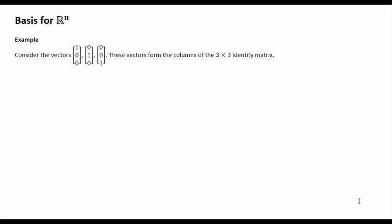So let's start by discussing a basis for R^n. Well, let's consider these three vectors: (1,0,0), (0,1,0), and (0,0,1). So these vectors form the columns of the 3 by 3 identity matrix.